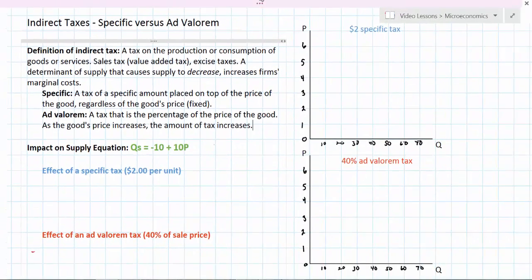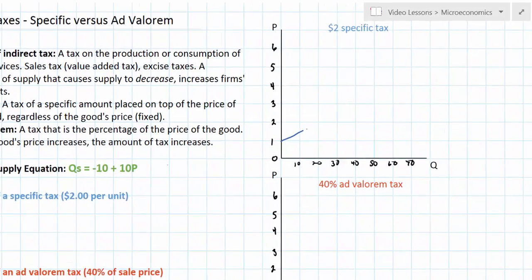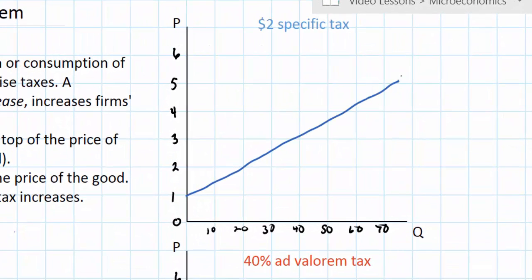Now let's do a non-mathematical illustration of the differences between a specific tax and an ad valorem tax. Let's look at our graph on the right here. Let's assume that supply for a particular good is represented by the upward sloping curve S1. This represents marginal cost, so I'll call it S1 equals MC1. A $2 specific tax will simply shift this supply curve up by the $2 of the tax.